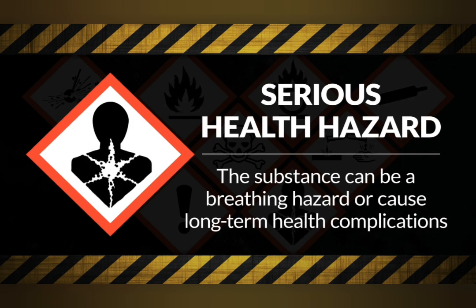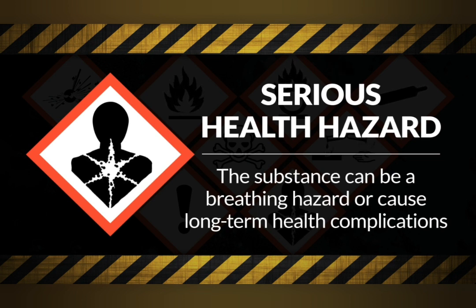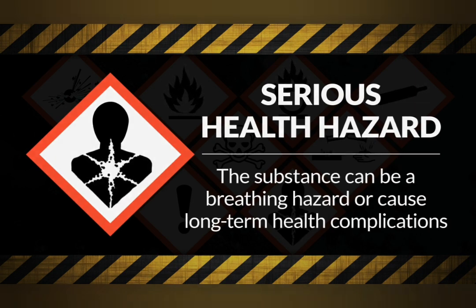Carcinogens, for example, can cause cancer. They can come from diesel exhaust fumes or benzene found in paint and rubber. They are also found in chemicals like arsenic, which can be used in pesticides and car batteries. They are known as mutagens and can alter a person's DNA.